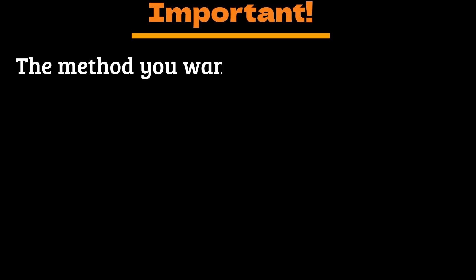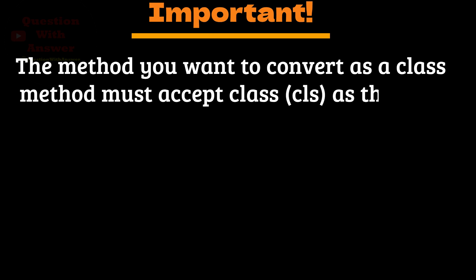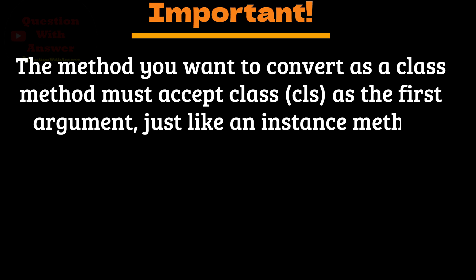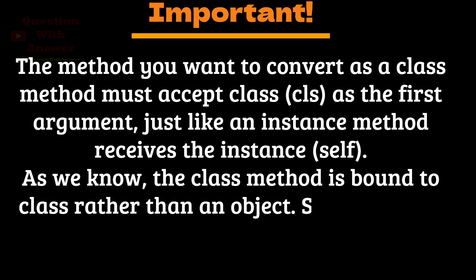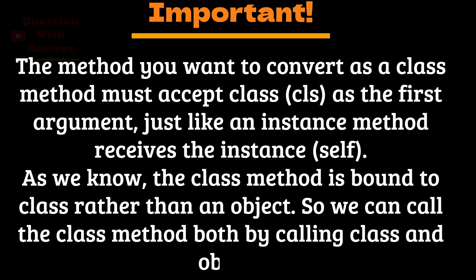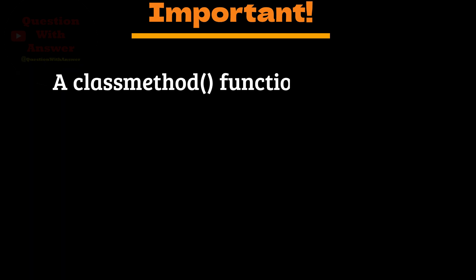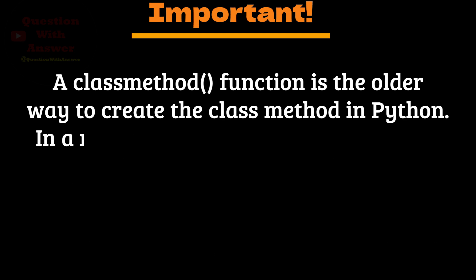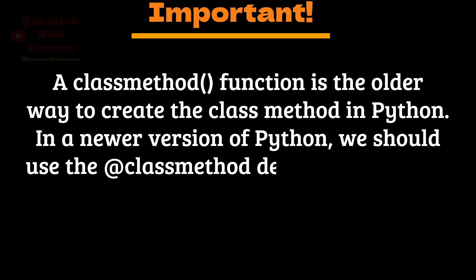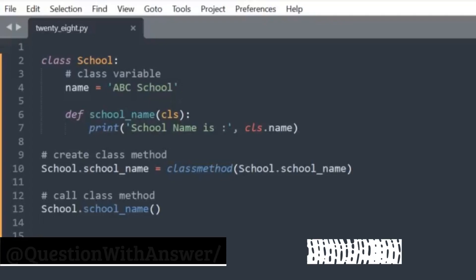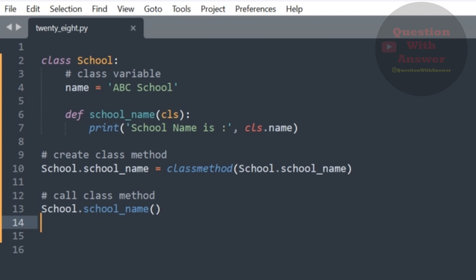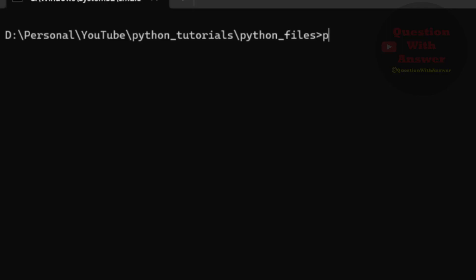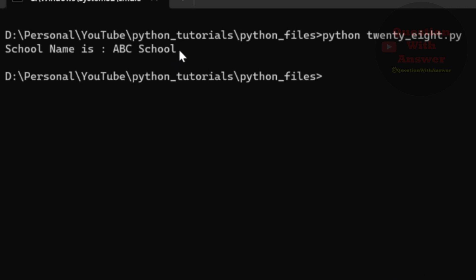The method you want to convert as a class method must accept cls as the first argument, just like an instance method receives self. We can call the class method both by using the class name and by using an object. The classmethod() function is the older way to create a class method in Python; in newer versions of Python, we should use the @classmethod decorator instead. Open your command prompt and run the Python file using python 20_8.py to see the result on screen.